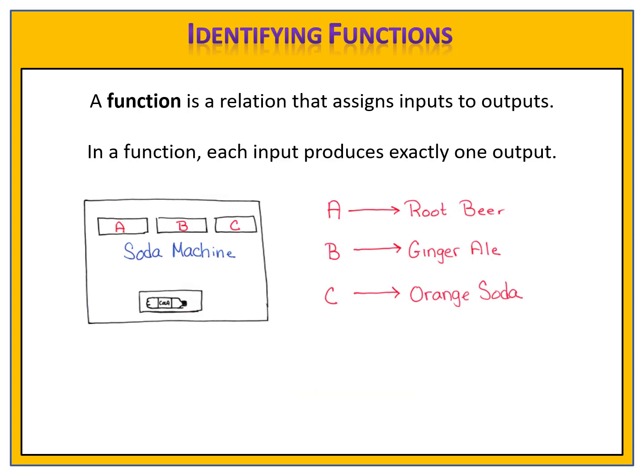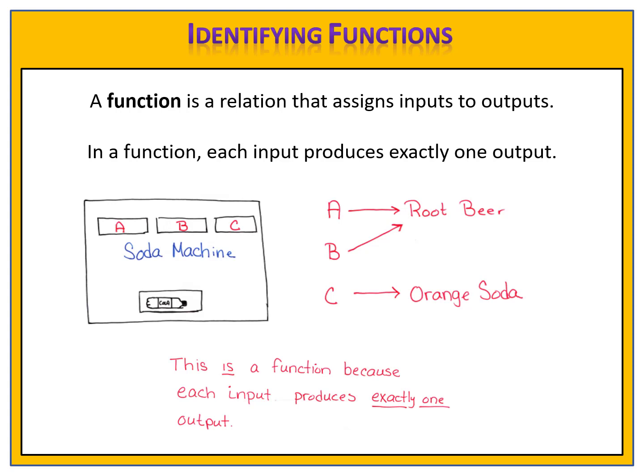Suppose we change the machine a little bit. Suppose ginger ale is not a popular flavor, but everybody likes root beer, so we decide to set two buttons for root beer. Now, when you press button A, you get a root beer. If you press button B, you get a root beer. If you press button C, you get an orange soda. Is this relation a function? Yes, it is. For any button that you press, you know exactly what the output will be. This is a function because each input produces exactly one output.